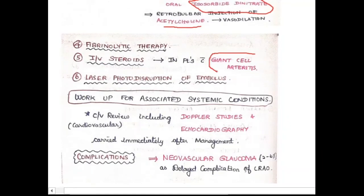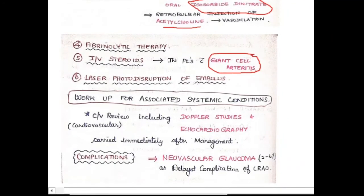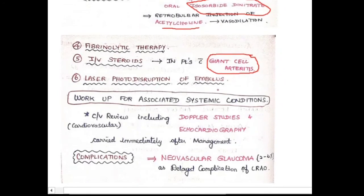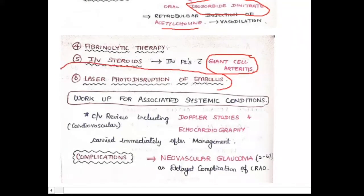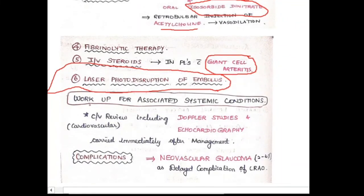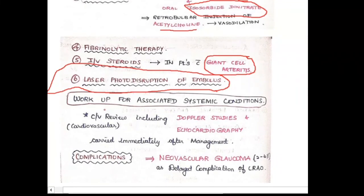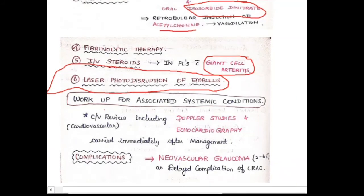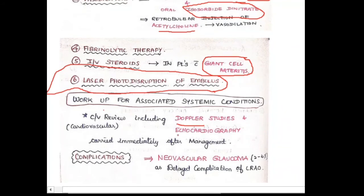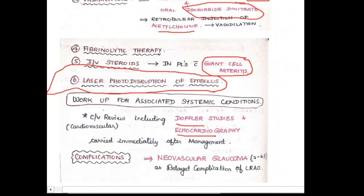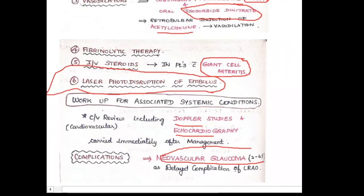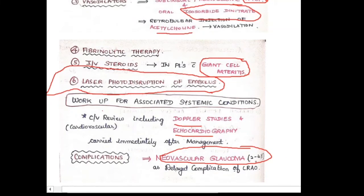Fibrinolytic therapy can also be given. IV steroids are given only in patients with giant cell arteritis, where the main treatment is steroids. Laser photo-disruption of the embolus is a last-choice option when other treatments fail. A workup for associated systemic conditions should be done — for cardiovascular conditions, Doppler studies and echocardiography are performed. The complication of central retinal artery occlusion is neovascular glaucoma, occurring in 2–6% of cases.